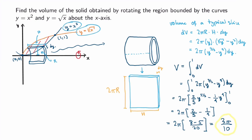We got the same answer as in the previous video, which is great, but the calculation was quite different — we did not evaluate the same integral. In this particular example you could use either the washer method or the cylindrical shell method, but sometimes one method is impossible or much faster than the other, so it's very important to know how to use both.